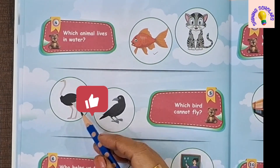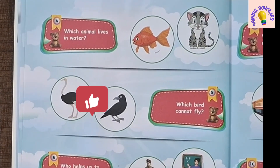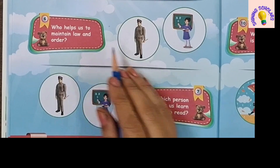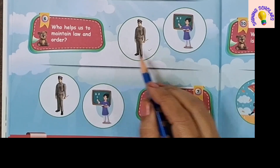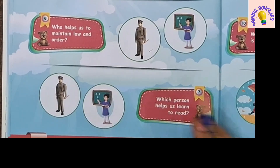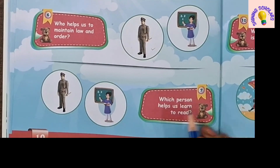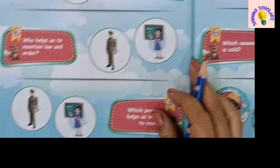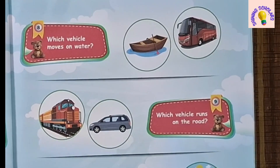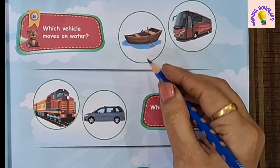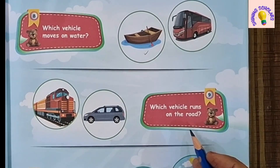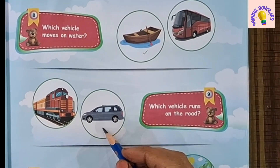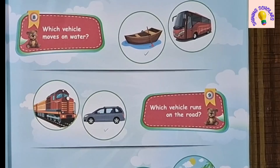Which bird cannot fly? Ostrich cannot fly. Who helps us to maintain law and order? Policeman helps us to maintain law and order. Which person helps us to read? Teacher helps us to read. Which vehicle moves on water? Boat. Which vehicle runs on the road? Car runs on the road.